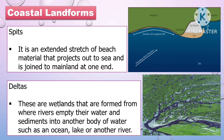The following are examples of coastal landforms. The first one is spits. A spit is an extended stretch of beach material that projects out to the sea and is joined to the mainland at one end. Another example is deltas. These are wetlands formed where rivers empty their water and sediments into another body of water, such as an ocean, lake, or another river.